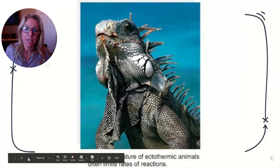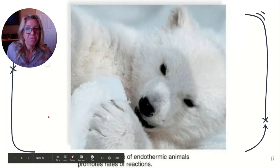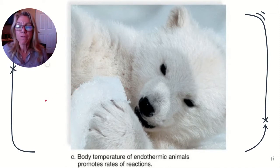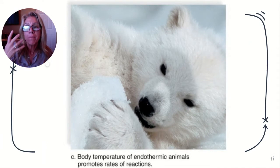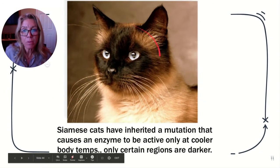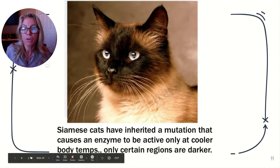Ectothermic organisms like lizards and snakes are more functional in the heat of the day than in the cold morning. But if you're a mammal, it doesn't matter — a polar bear can be active in any temperature because it maintains body temperature through hair and fat, keeping enzymes functional. An interesting example: Siamese cats have coloration differences because certain genes are activated at different temperatures, so different enzymes are active in different body regions.